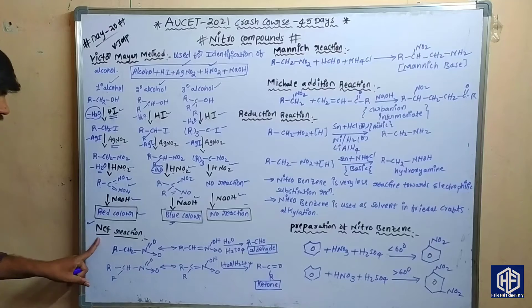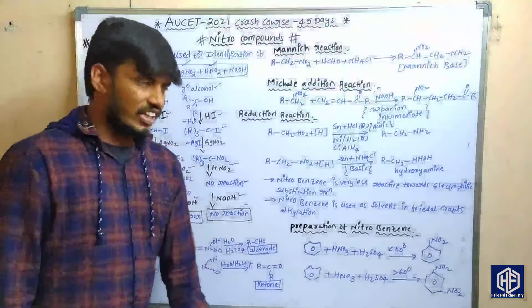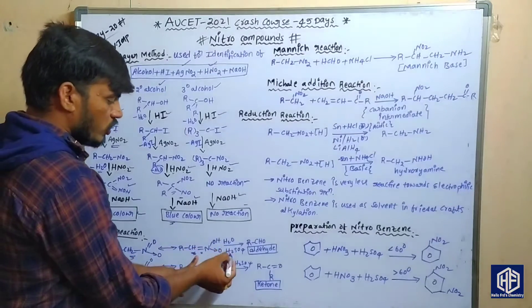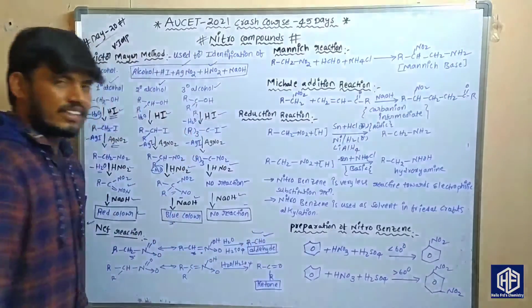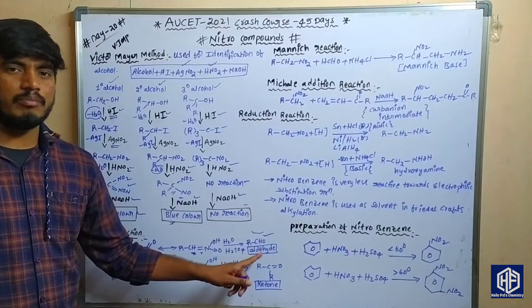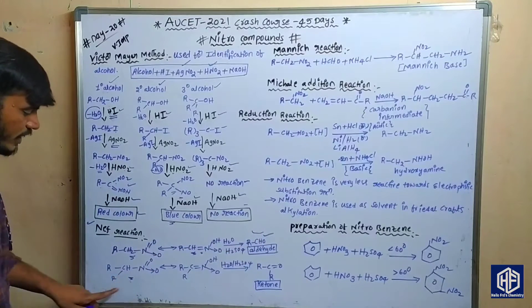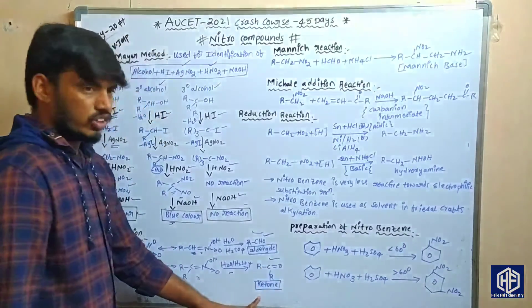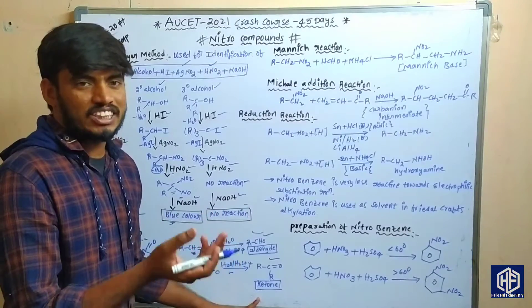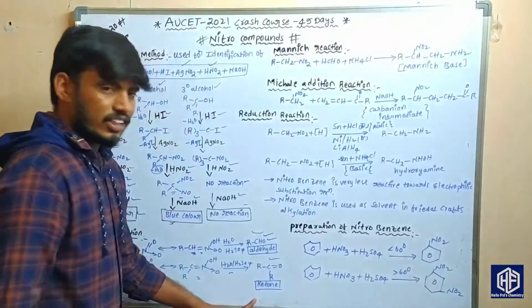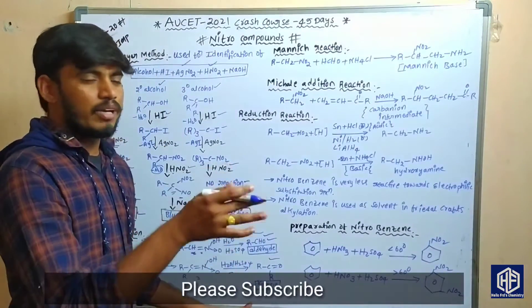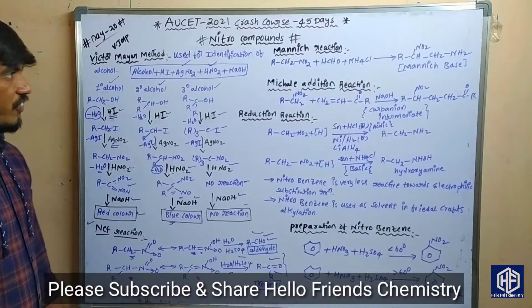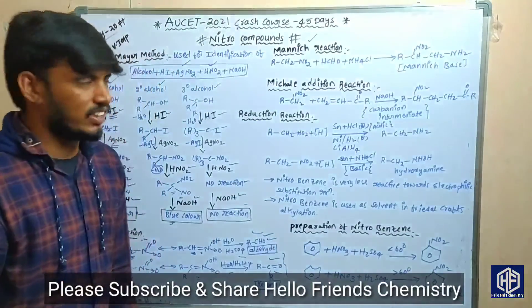Now coming to another important reaction — the NEP reaction, also known as the Nef reaction. The Nef reaction involves nitroalkanes: primary nitroalkane RCH2NO2. The Nef reaction converts nitroalkanes to carbonyl compounds. These two reactions — NEP/Nef for primary and secondary nitroalkane — are very important from an examination point of view. Now coming to another important reaction, the Nef reaction.